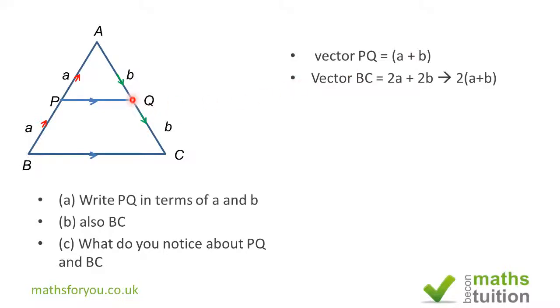Or we could do from B to P, which is a, and from P to Q, which is a + b, so up to now we've got 2a + b, and then we add b, which gives us 2a + 2b.